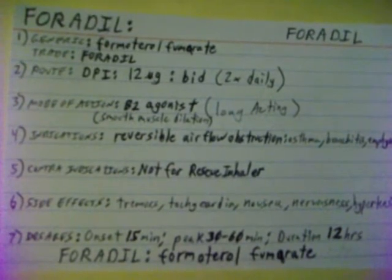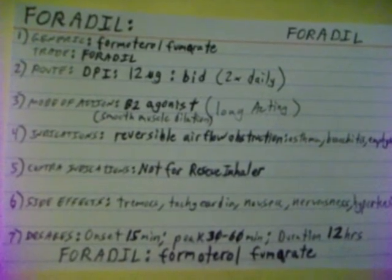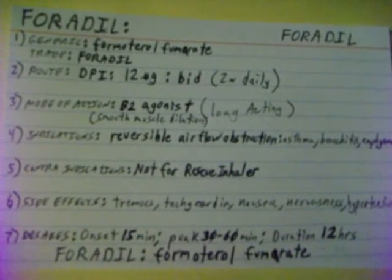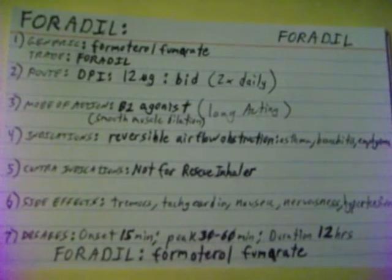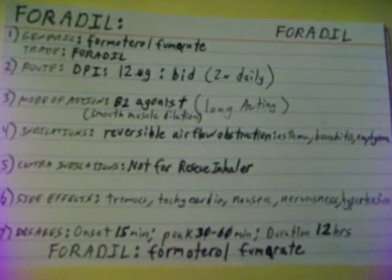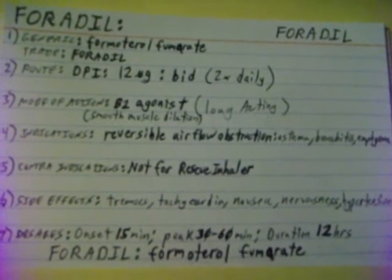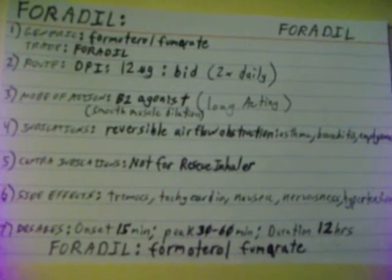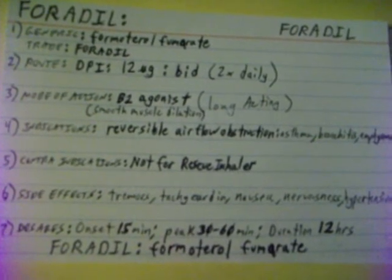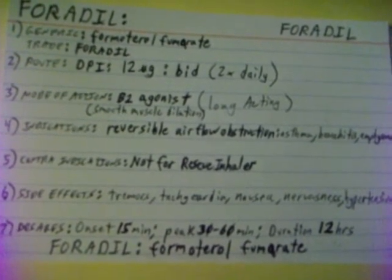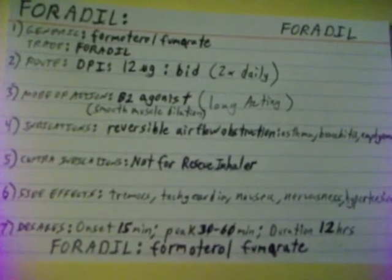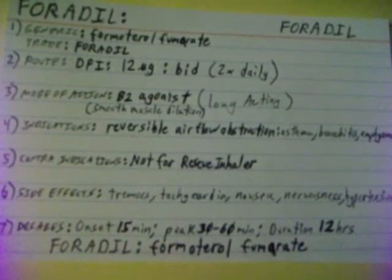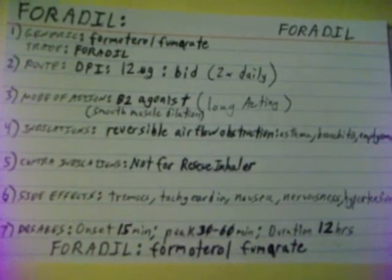Side effects of Foradil are tremors, tachycardia, nausea, nervousness, and hypertension. Foradil's onset is 15 minutes, its peak is 30 to 60 minutes, and Foradil Fumarate's duration is 12 hours.